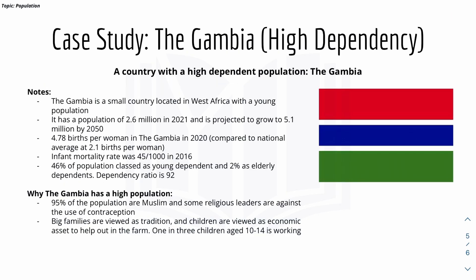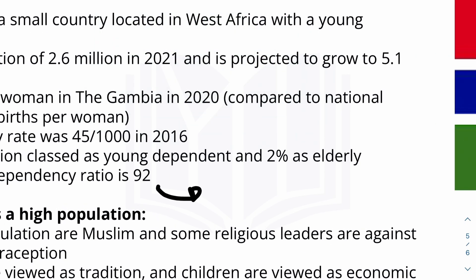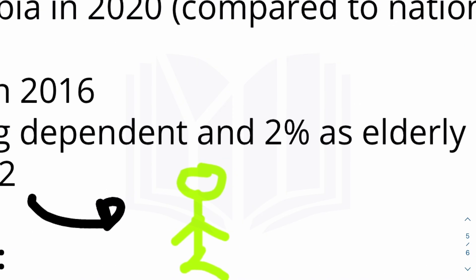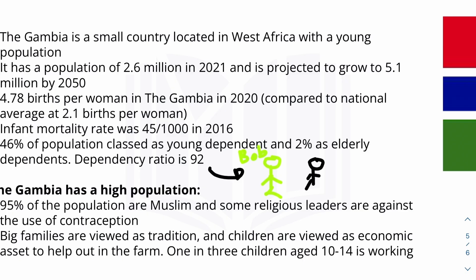Now for the case study — a country with a high dependent population: the Gambia. The Gambia is a small country located in West Africa with a young population. It has a population of 2.6 million in 2021, projected to grow to 5.1 million by 2050. The dependency ratio is 92, meaning that for every one working person, there are 92 people depending on them — so for every 'Bob' who works, 92 people depend on that one person.